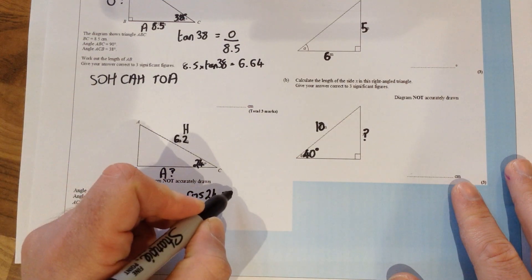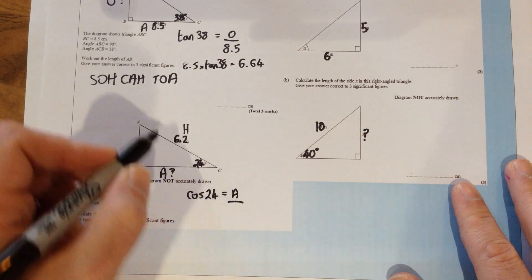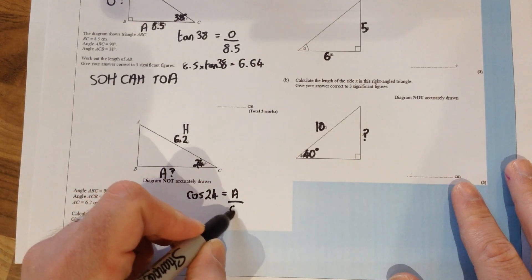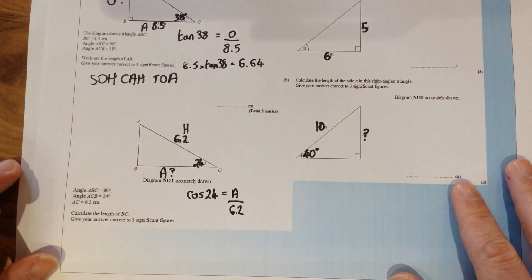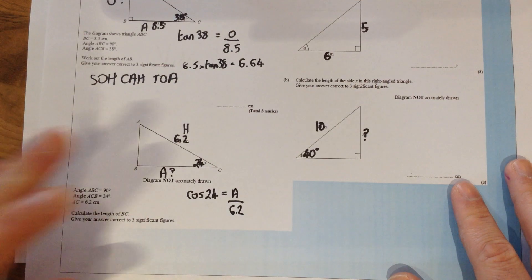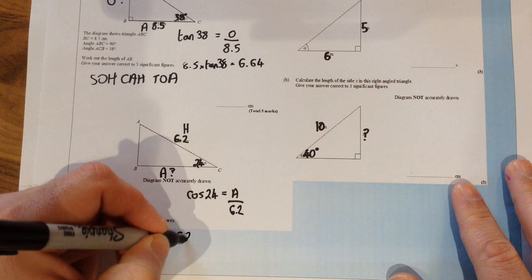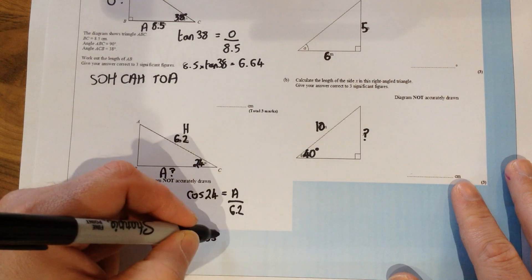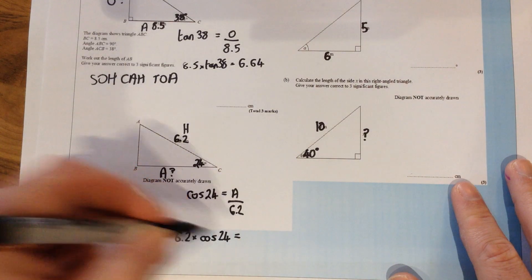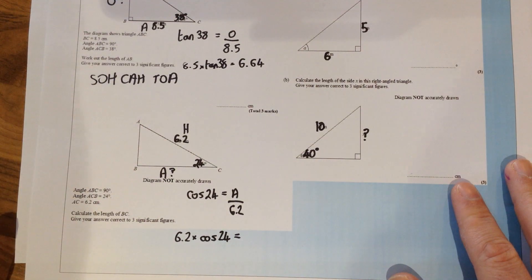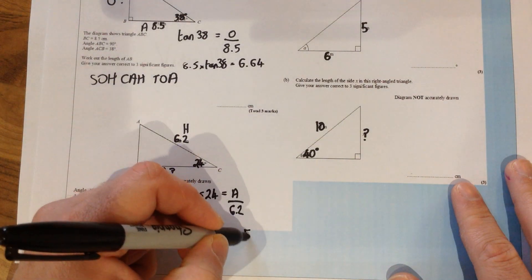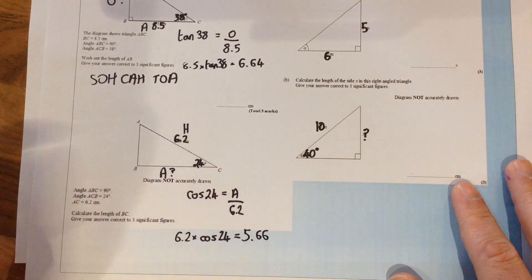So the adjacent side is the one we don't know. The hypotenuse is 6.2. So we get something that looks like this. Rearranging like the last question we would have to times both sides by 6.2 to give us 6.2 times cos 24 and if you type that into your calculator that gives an answer of 5.66.